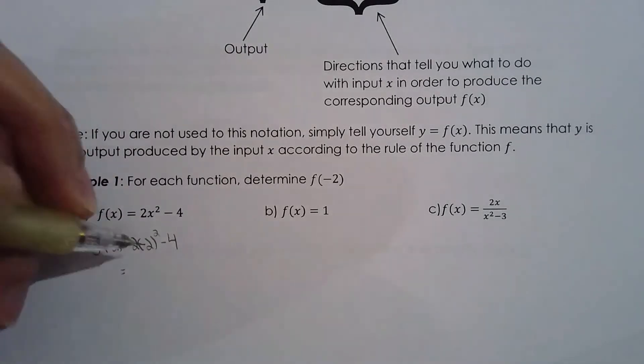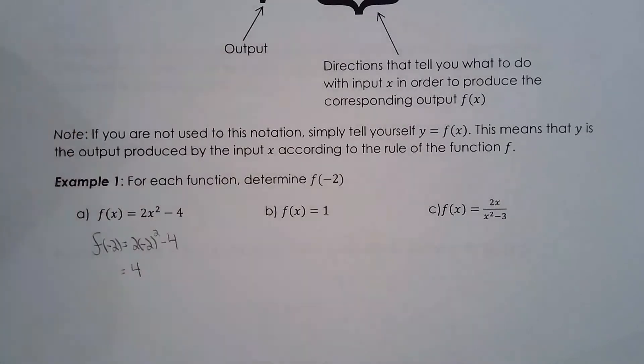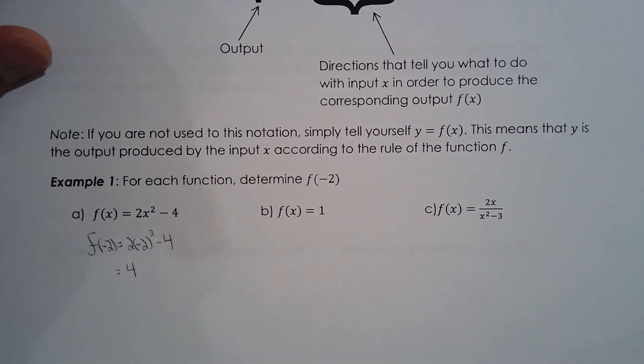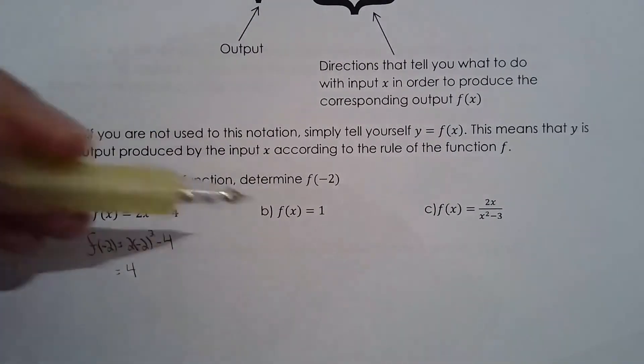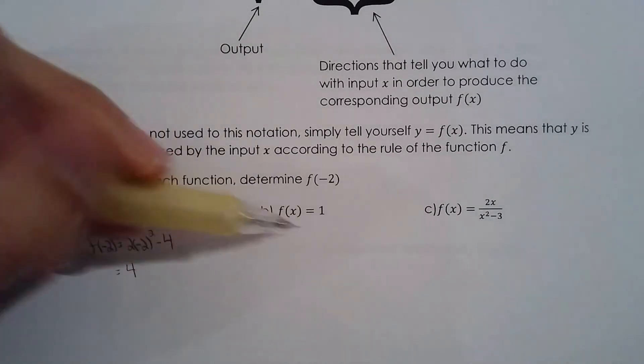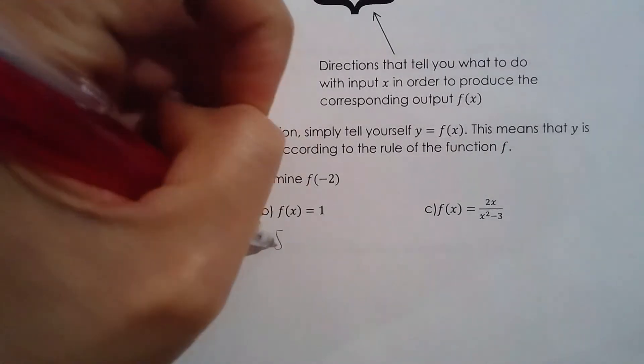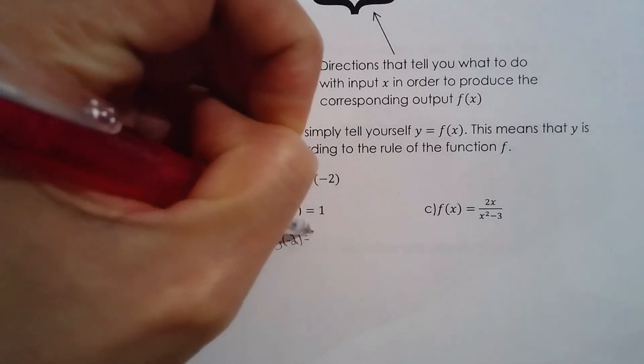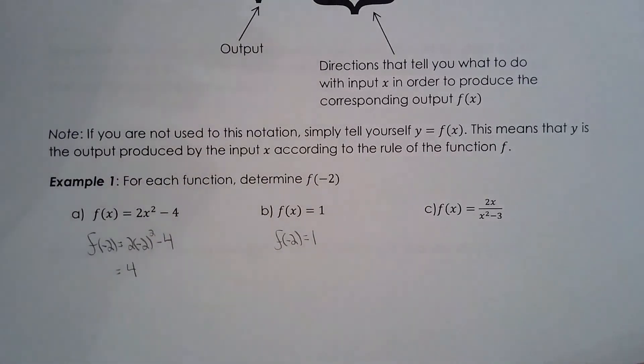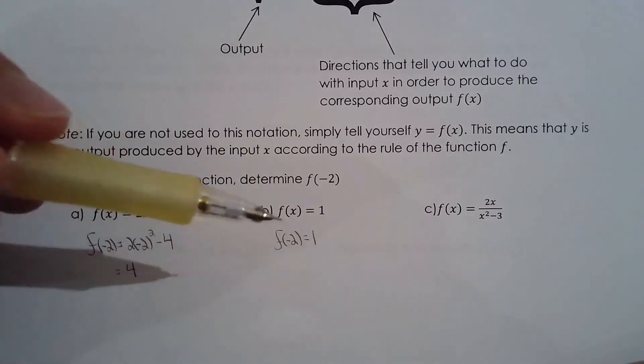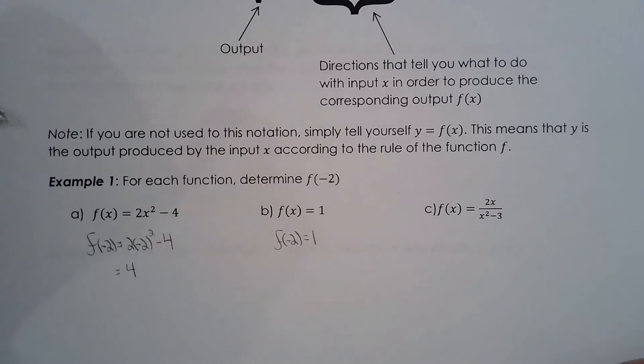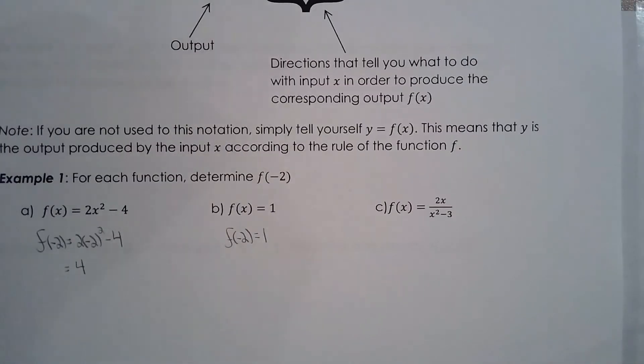So follow BEDMAS, 4, 2, 8, 4. Another function here, this one, this is actually a constant function as you can tell from the instructions or the directions. It doesn't depend on x. f of x is always equal to 1, so f of negative 2 is equal to 1. It doesn't matter what your input is, the output will always be 1. That's why it's called a constant function.